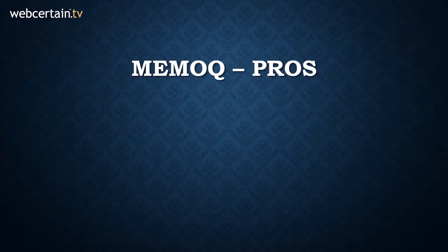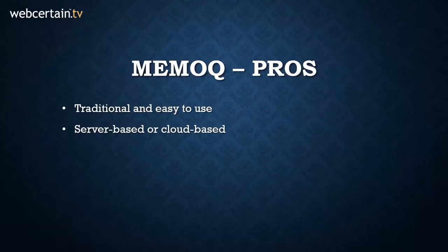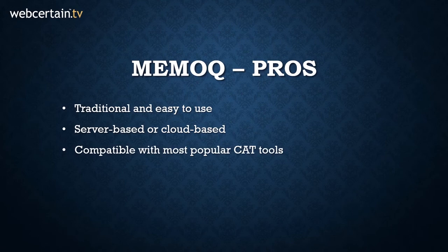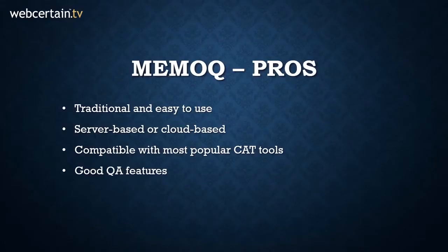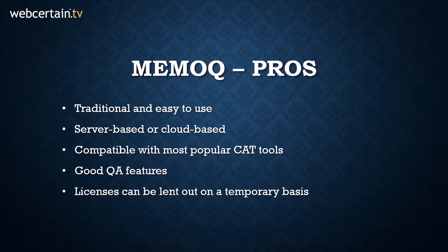Let's examine MemoQ's pros. MemoQ is another traditional system, which means that anyone with experience using Kilgray products should find it easy to use. It can either have a cloud-based or server-based setup. MemoQ is compatible with SDL Trados and other popular CAT tools, which makes it a good flexible option for companies that use several different CAT tools. MemoQ allows you to integrate different quality models into the workflow, helping to ensure tight linguistic QA checks. It also allows you to lend licenses to your translators on a temporary basis, typically for the duration of the job, so that they do not need to have a MemoQ license themselves, thereby expanding your pool of potential translators.